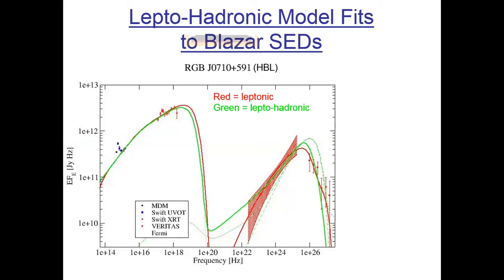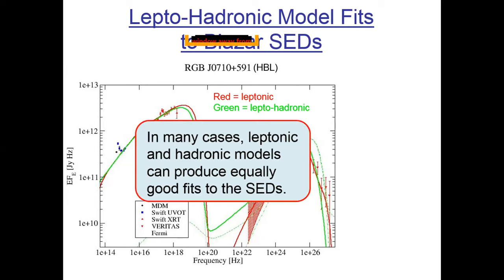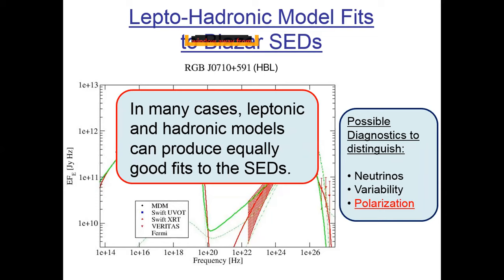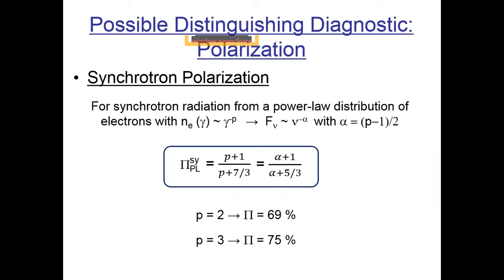Alternatively, high-energy emission can be produced by co-spatially accelerated protons to ultra-relativistic energies, where gamma rays are produced by proton synchrotron or decay products of charged and neutral pion cascades. Unfortunately, pure SED modeling usually does not give us the answer — it is generally possible to model SEDs with both leptonic and hadronic models. We need alternative measures to distinguish, and one is neutrinos; if we can associate neutrinos with blazars, we know hadronic processes are at play. This conference is about polarization, so I'll talk about distinguishing through polarization signatures.